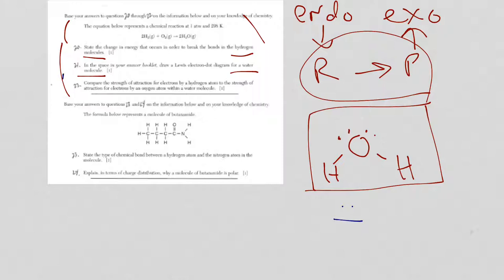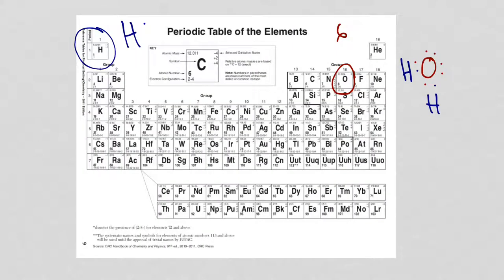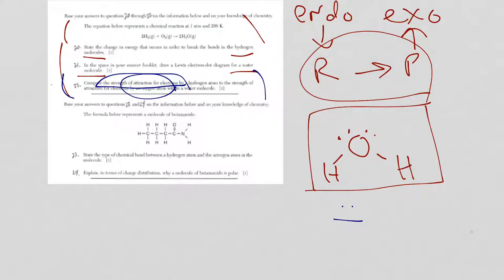And then finally in 22, we see again the strength of attraction for electrons. In other words, they're talking about electronegativity again. And we're going to compare that to the strength of attraction for electrons by an oxygen atom. Well, oxygen has a higher electronegativity than hydrogen. Remember, fluorine is the most electronegative. So oxygen has a greater strength than hydrogen for electrons. That's all you have to say.